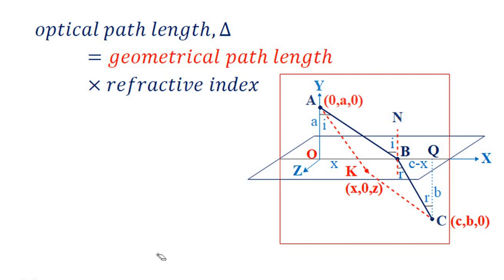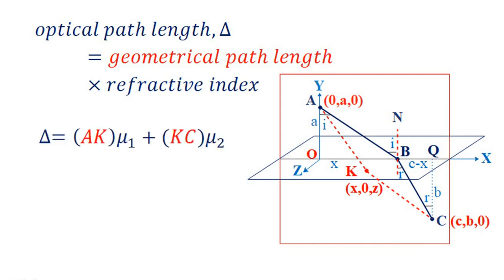We know that the optical path length delta is equal to the geometrical path length multiplied by the refractive index. By Fermat's principle, optical path length delta equals mu times the integral of dL, where mu is the refractive index and the integral of dL is the total geometrical path length. For the path A→K→C, delta equals AK times mu1 plus KC times mu2.